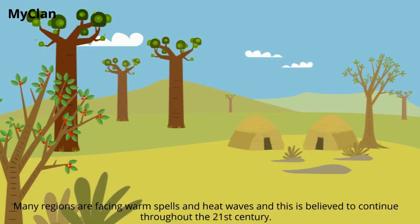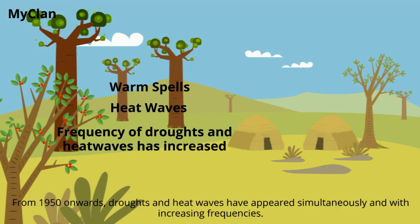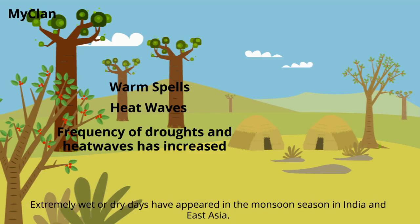Many regions are facing warm spells and heat waves, and this is believed to continue throughout the 21st century. From 1950 onwards, droughts and heat waves have appeared simultaneously and with increasing frequencies. Extremely wet or dry days have also appeared in the monsoon season in India and East Asia.